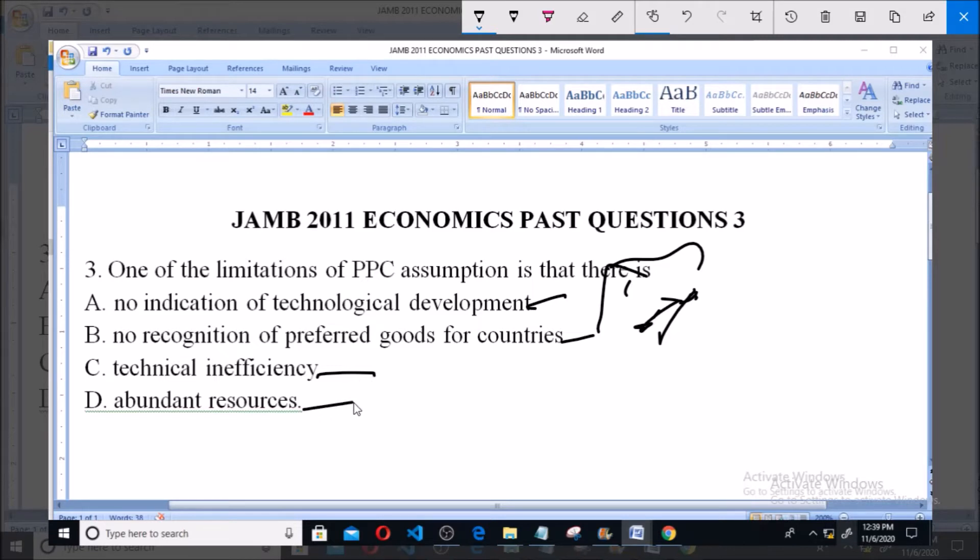And if we look at the PPC, PPC is called production possibility curve, production possibility curve.